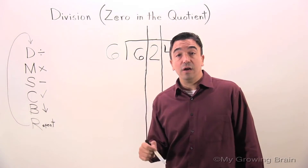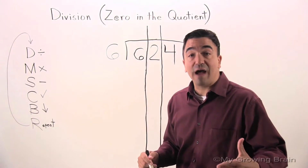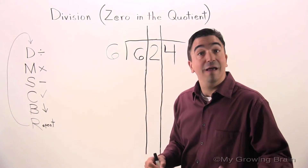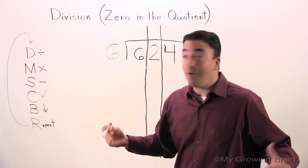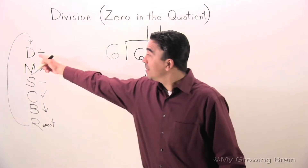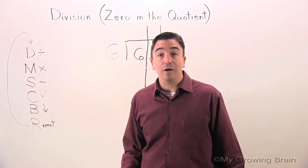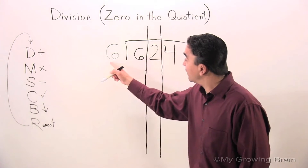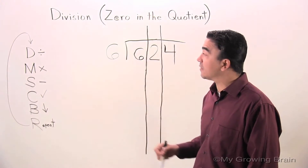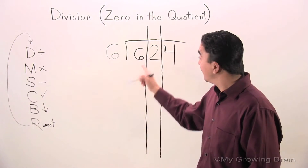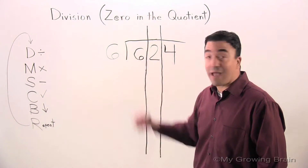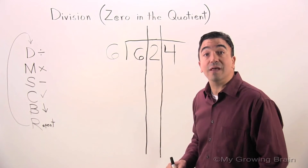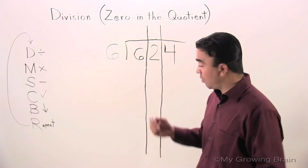The six over here, that's the divisor. We're ready to go. Look over here — D for divide. Six goes into six, or six divided by six, is one.